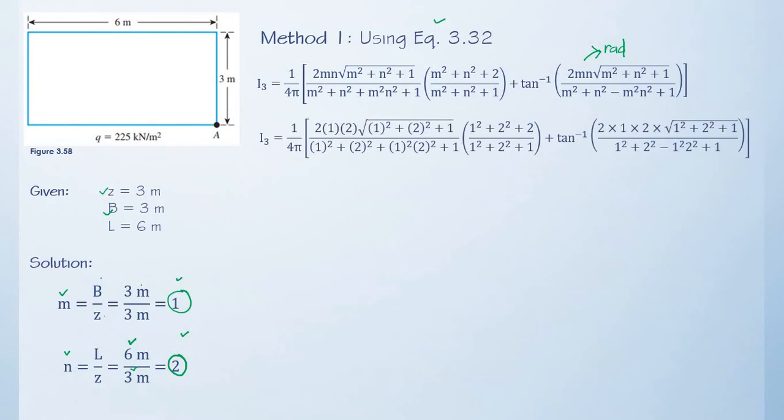Simplifying, I₃ is equal to 1 over 4 pi multiplied by 1 divided by 1.143 plus 1.369. This value has already been converted into its radian form. And the value of I₃ is 0.1999.